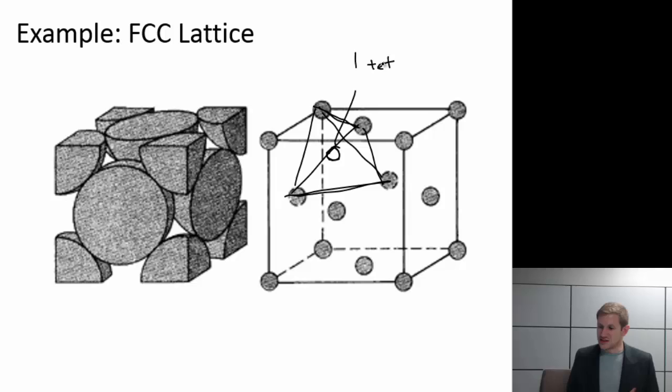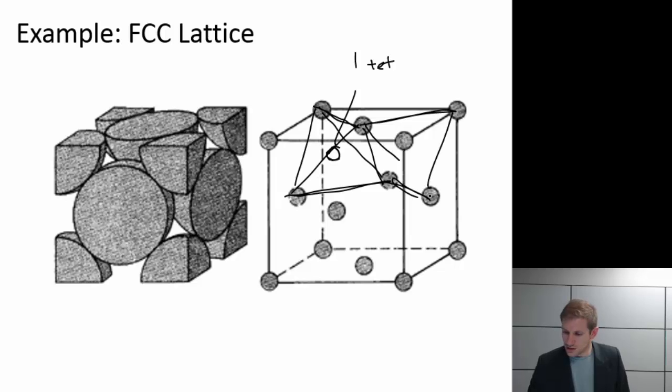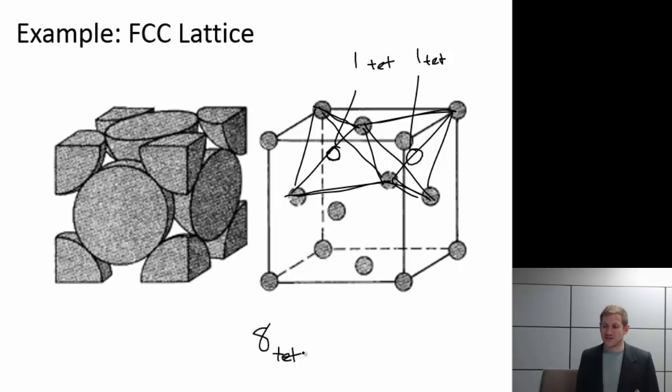And again, that's not the only tetrahedral site. So for example, if I connect these two and these two, then I will see another tetrahedron. And so there is one other tetrahedral site. And both of those are entirely within the unit cell. So again, work this through by yourself. Count up how many different tetrahedral sites, where would they be? You should come out to eight tetrahedral sites in the FCC lattice.